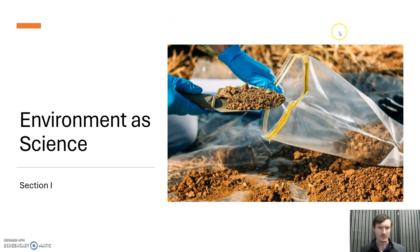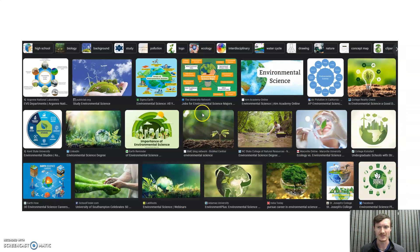So to start out with, section one: environment as science. Somebody's taking a soil sample here, and what we want to make sure of is marking exactly where you are in GIS coordinates. I went to Google, searched 'environmental science,' pulled up images without tailoring the results — no algorithm adjustment — and this is what comes up.